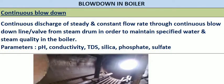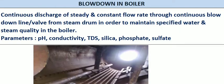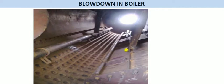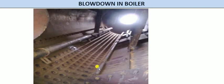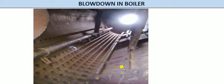The continuous blowdown is taken from the steam drum. This is the typical steam drum in the boiler — the water wall tubes are projected and welded into the steam drum. There is a feed water pipe and a continuous blowdown pipe, which is a perforated pipe with holes. This line is connected to the drain system and goes to a flash tank. We cannot directly drain it because the steam drum pressure is there; it needs to be flashed out and goes to the blowdown vessel.